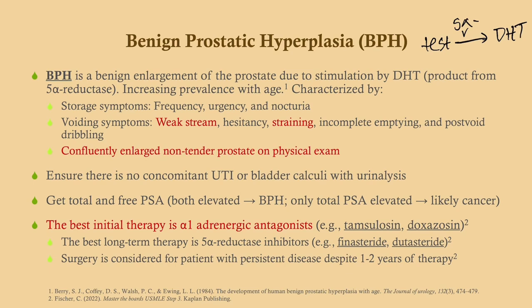BPH presents with storage symptoms — frequency, urgency, and nocturia — because the bladder is full, and voiding symptoms — weak stream (a dead giveaway), hesitancy, and straining to overcome the prostate's clamping effect, as well as post-void dribbling. On physical exam, look for a confluently enlarged, non-tender prostate, as opposed to prostate cancer which presents with nodules. Ensure there's no concomitant UTI or bladder calculus with urinalysis — UTI shows WBCs, nitrites, and esterase; bladder calculi show red blood cells.